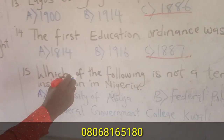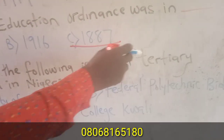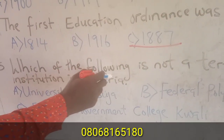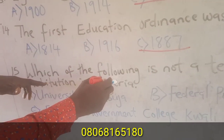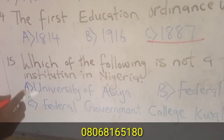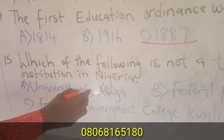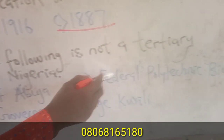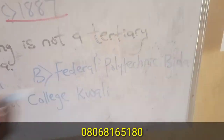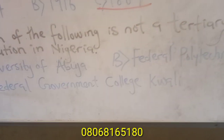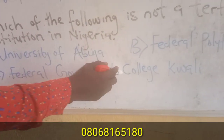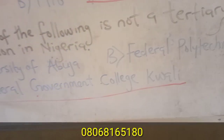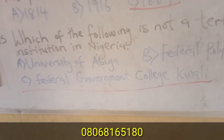Question fifteen: Which of the following is not a tertiary institution in Nigeria? Tertiary institutions are higher institutions. University of Abuja is tertiary. Federal Polytechnic is tertiary. However, Federal Government College is a secondary school, so it is the answer — it is not a tertiary institution.